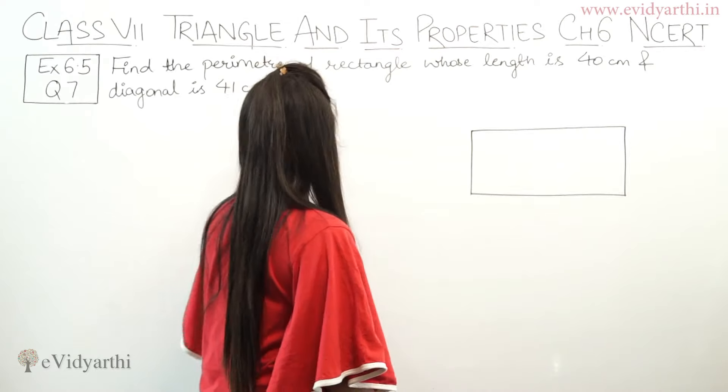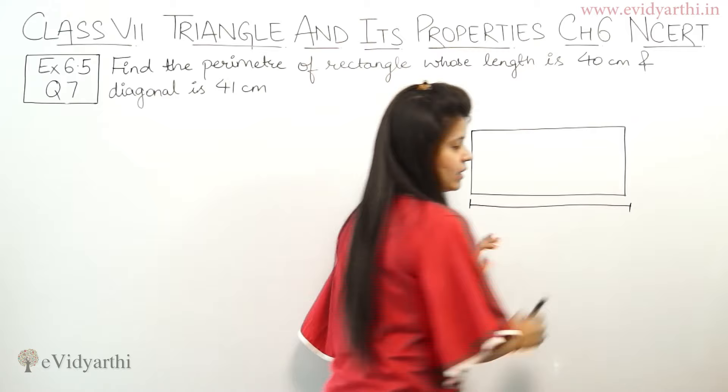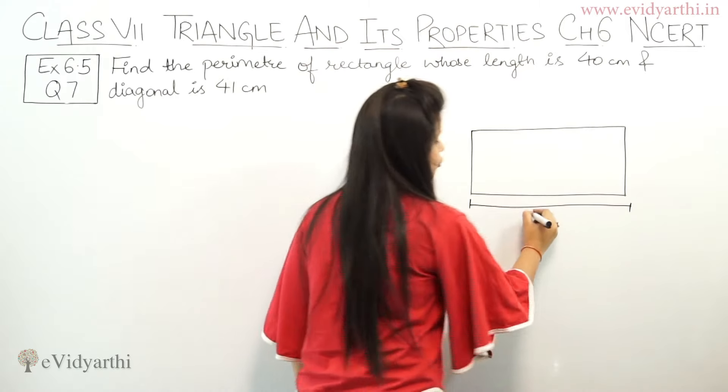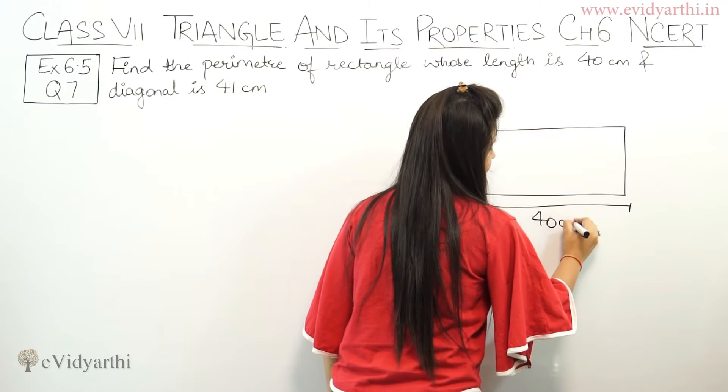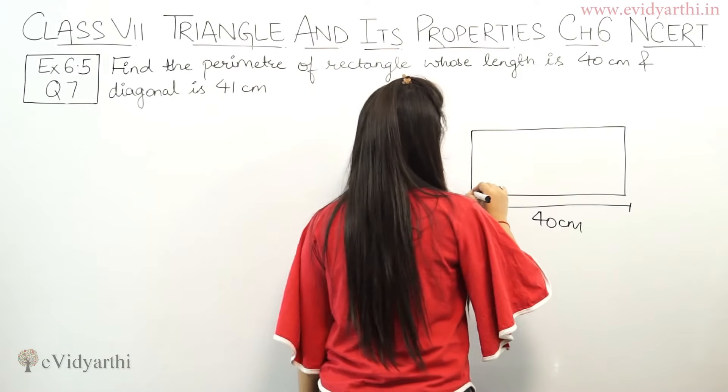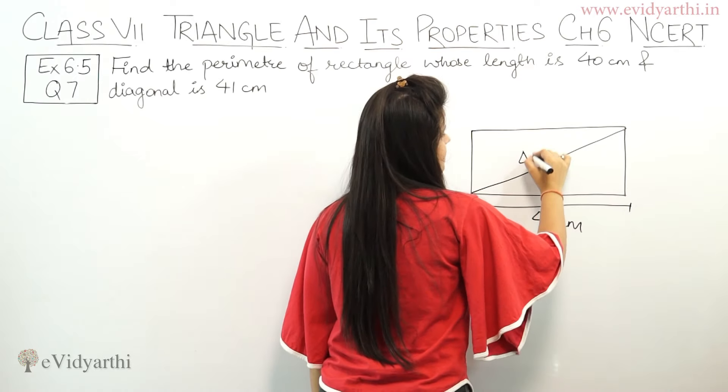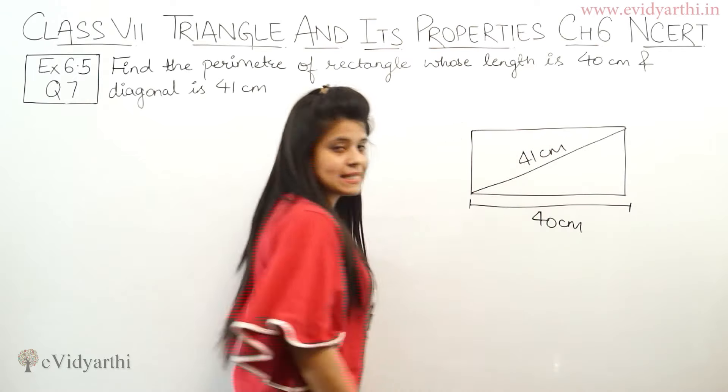First, what is given? Length given is 40 cm and given is diagonal. Diagonal means this one. So what is given? This is 41 cm.